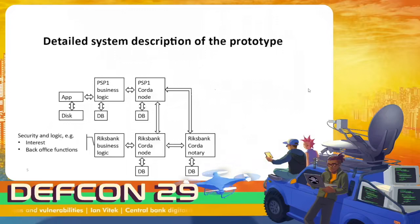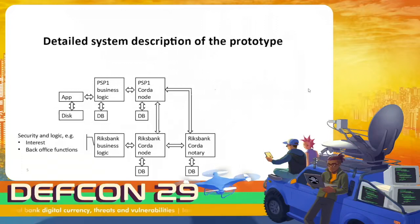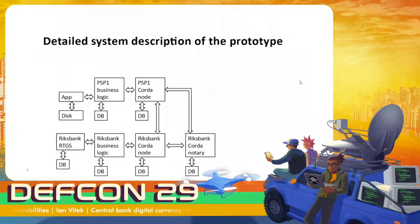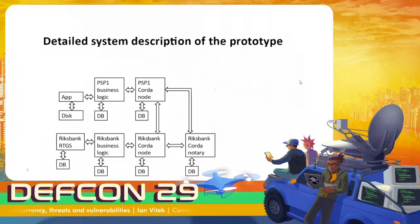The Riksbank also has business logic with lots of back office functions. We want to be able to pay interest for the money in circulation, and we have information about the outstanding central bank digital currency in circulation. We also have connections to the Riksbank real-time gross settlement system — an RTGS system that most central banks have — but we will not talk about that because it has nothing to do with the threats and vulnerabilities of this prototype.